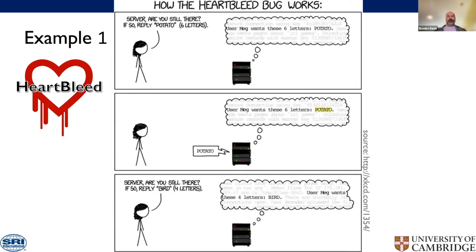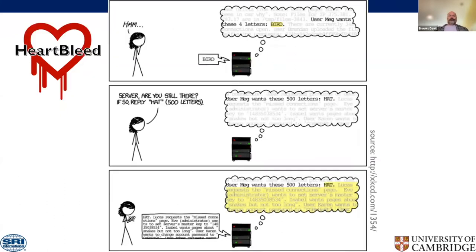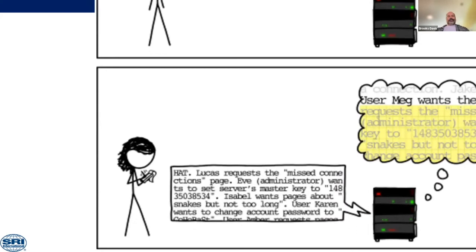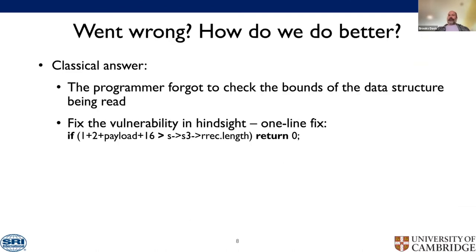Here's an example of things that go wrong — you probably remember Heartbleed. The way it worked: a client would send a heartbeat message like 'send me potato, it's six letters.' But what if you sent 'send me hat, it's 500 letters'? The server would send 'hat' and then whatever was laying around in a buffer — in this case 'please change the user's password to this.' The classical answer is that the programmer made a one-line bug fix, but we know this isn't working.